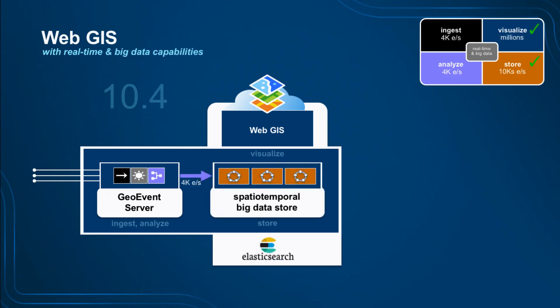To overcome that, at the 10.4 release we introduced a new type of ArcGIS Data Store called the Spatial Temporal Big Data Store. The first question I usually get is about licensing — there is no license for the Big Data Store. As long as you have an ArcGIS Enterprise or Portal license, you have the rights to deploy as many nodes as you want — 100 nodes, three nodes, it's up to you. The only cost is the physical hardware or cloud resources. It's a component of our platform, not a product.